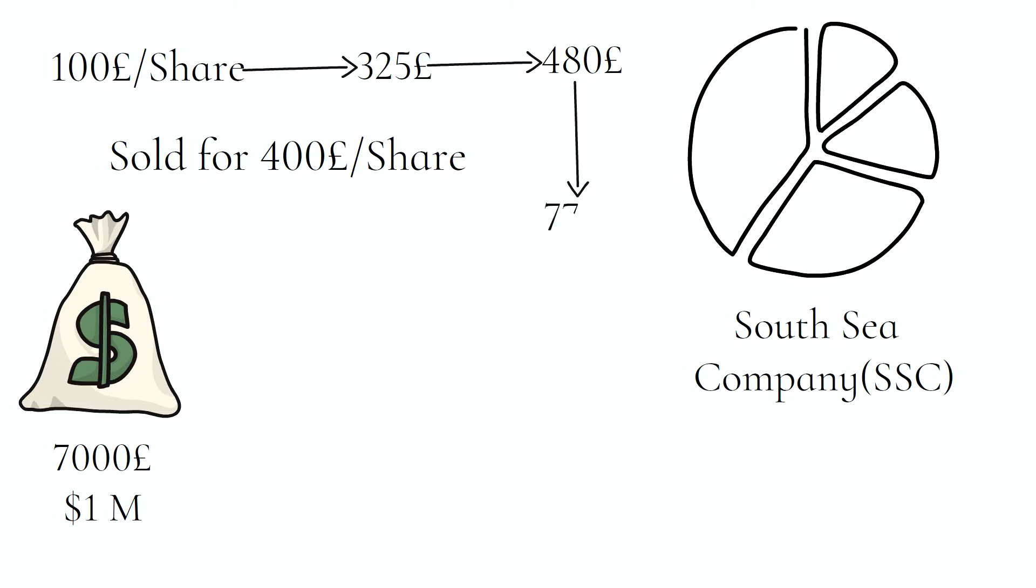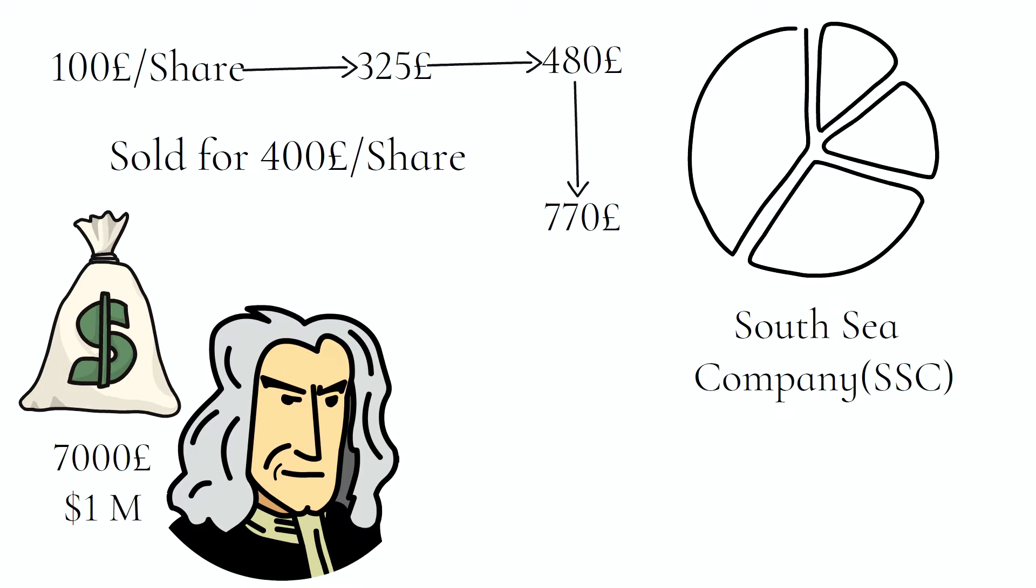But by June, SSC shares were trading as high as 770 per share. Should Newton have waited? Newton was frustrated for selling it too soon. Why did I sell it too soon? He decided to go back into the game.